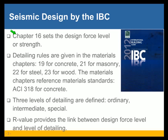The higher the R, the lower the strength level, and the other way around. The detailing rules, on the other hand, are given in the materials chapters of the code: Chapter 19 for concrete, 20 for aluminum, 21 for masonry, 22 for steel, and 23 for wood.